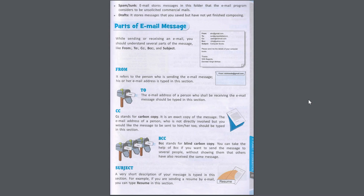To: the email address of the person who shall be receiving the email message should be written in this section. CC: CC stands for carbon copy; it is an exact copy of the message. The email address of a person who is not directly involved but you would like the message to be sent to him or her too should be written in this section.